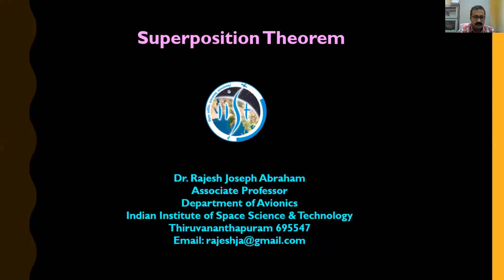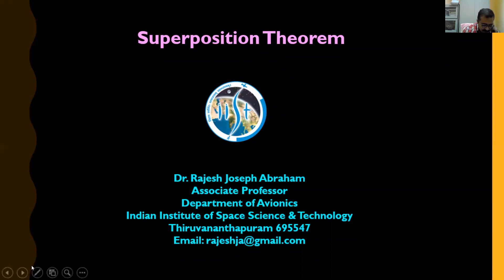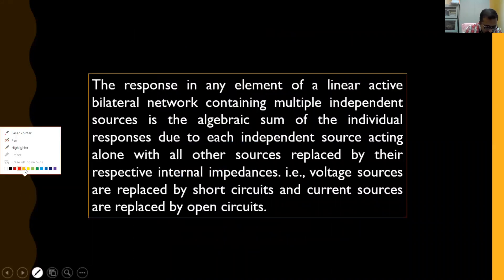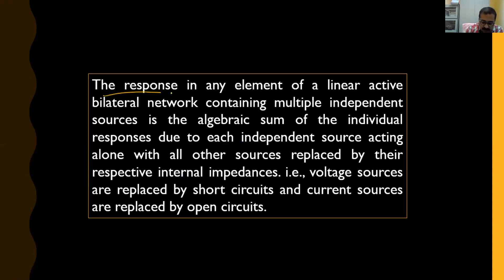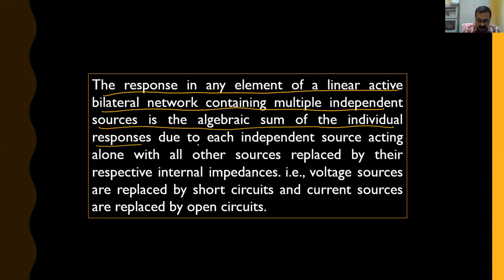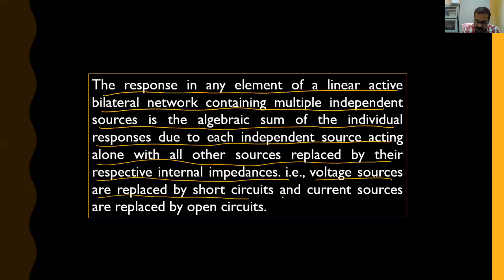Today we are going to discuss the superposition theorem. This theorem forms the basis of linear circuits. A system is said to be linear if it obeys the superposition principle and homogeneity property. The theorem states that the response in any element of a linear active bilateral network containing multiple independent sources is the algebraic sum of individual responses due to each independent source acting alone, with all other sources replaced by their respective internal impedances — that is, voltage sources replaced by short circuits and current sources replaced by open circuits.